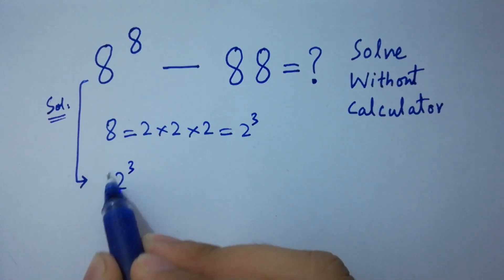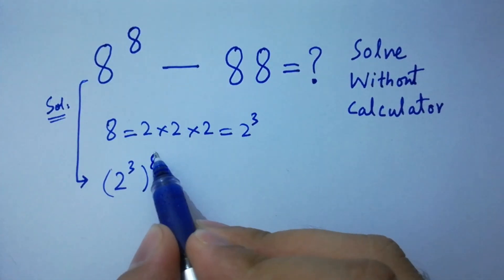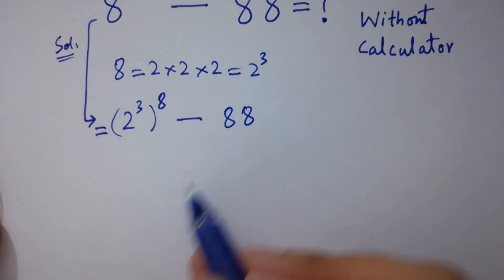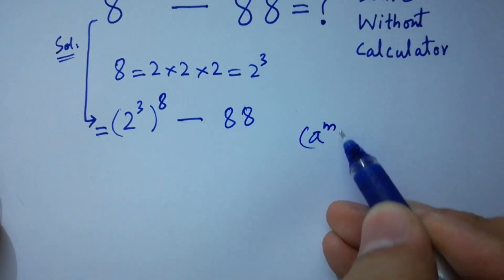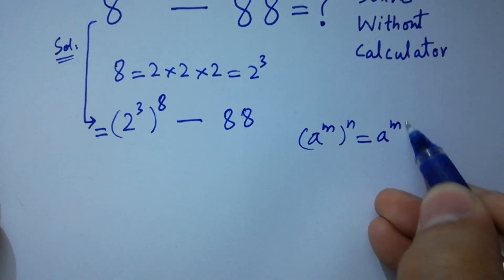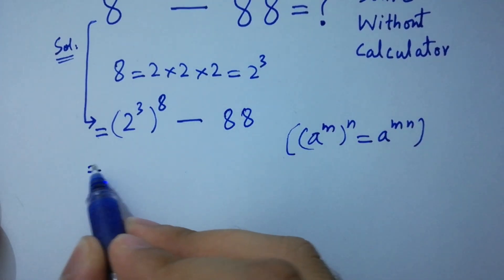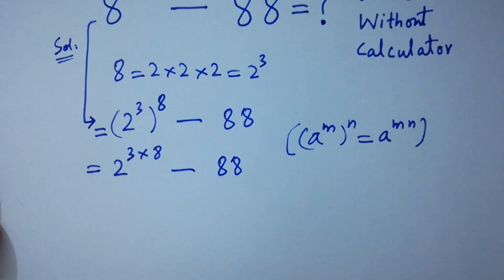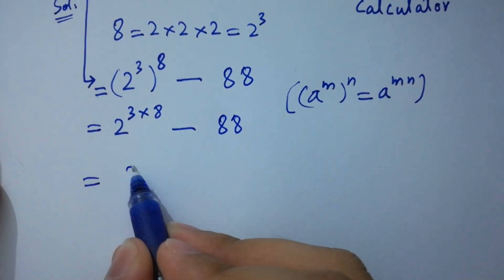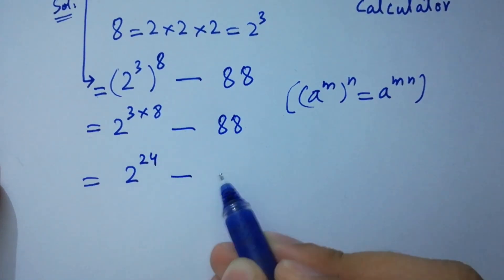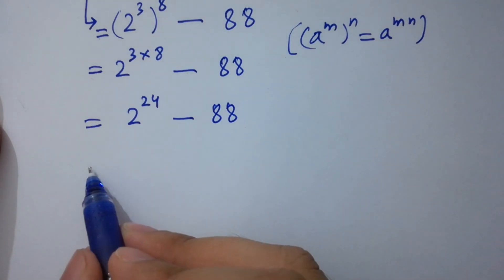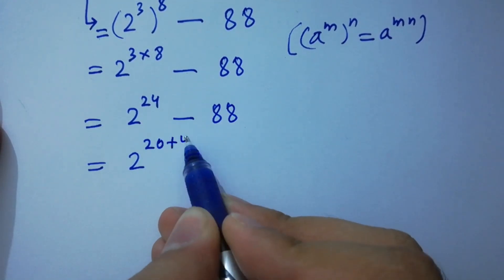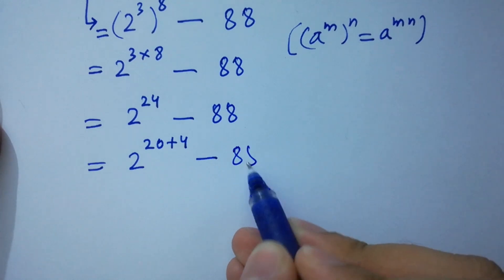So it will be 2 cubed to the whole power 8, minus 88 as it is. Next, using the rule a to the power m to the whole power n equals a to the power m times n, we have 2 to the power 3 times 8, which is 2 to the power 24, minus 88.